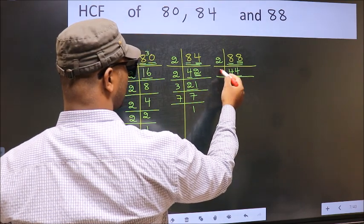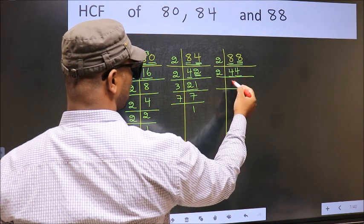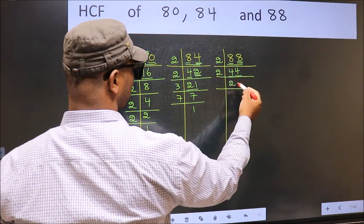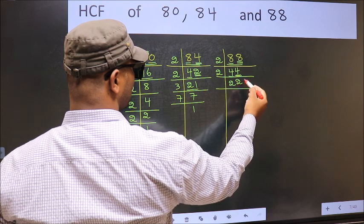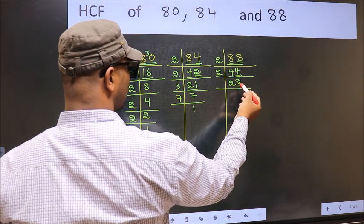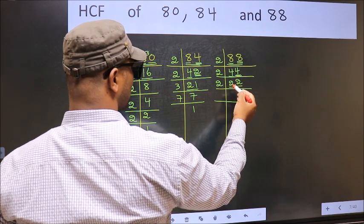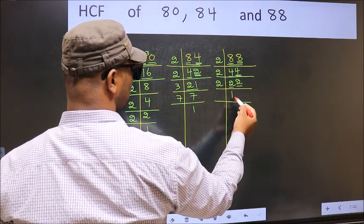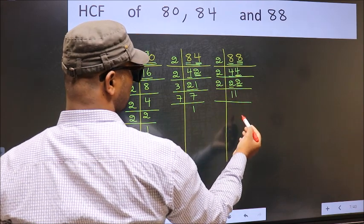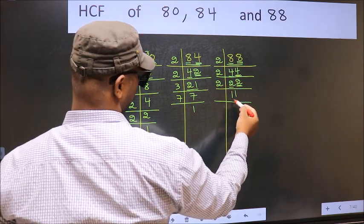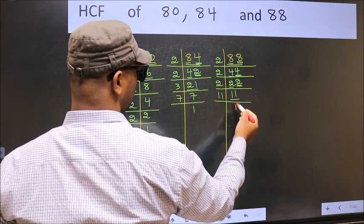Now last digit 4, so take 2. First number 4. When do we get 4 in the 2 times table? 2 twos, 4. The other number 4. When do we get 4 in the 2 times table? 2 twos, 4. Now last digit 2, so take 2. First number 2 — 2 ones, 2. The other number 2 — 2 ones, 2. Now here we have 11. 11 is a prime number, so 11 once, 11.